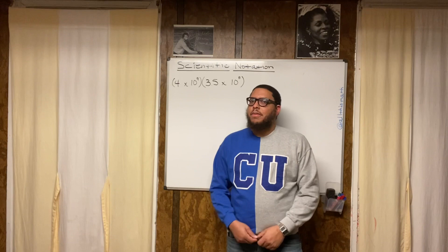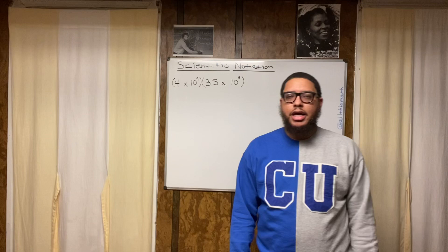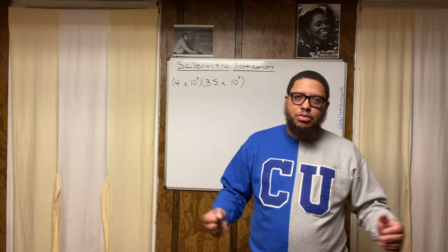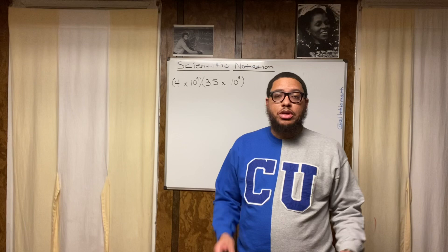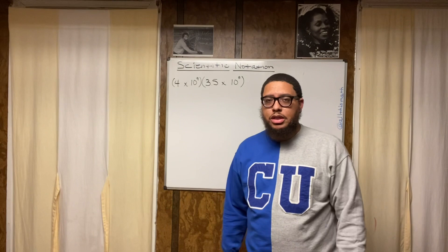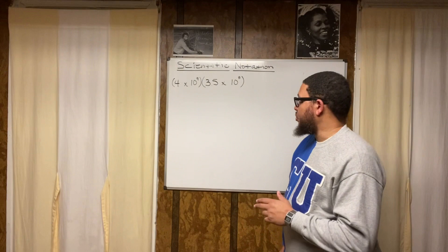Moving right along, today's lesson involves scientific notation. Scientific notation is something we use when we're dealing with really big numbers and when we're dealing with really small numbers — numbers that would require a lot of decimal places. We can also multiply, divide, add, and subtract numbers that are in scientific notation. In this particular example, we're going to be multiplying two numbers that are already in scientific notation.